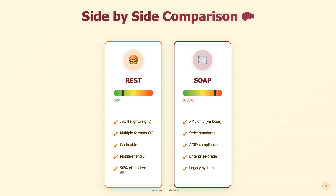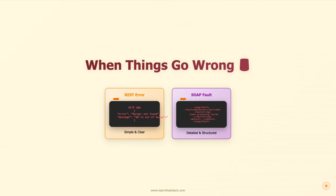Let's put them side by side. REST is fast — see that speed meter? It's lightweight, flexible, handles multiple formats, and perfect for mobile. It's your everyday go-to. SOAP is secure — notice how that meter swings the other way. It's heavy but bulletproof: XML only, strict standards, ACID compliance. It's built for situations where you absolutely, positively cannot afford to lose a single byte. Think of it this way: REST is your Honda Civic — reliable, efficient, gets the job done. SOAP is your armored truck — slower, heavier, but nothing's getting through that security.